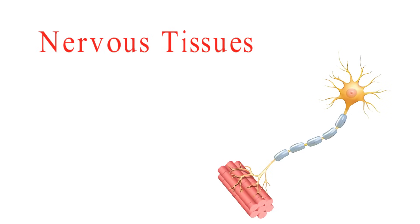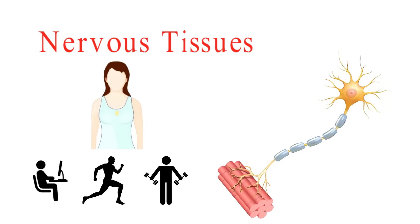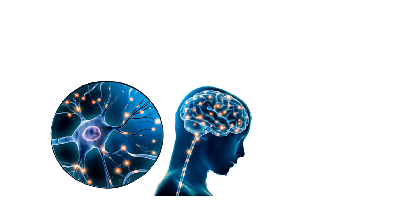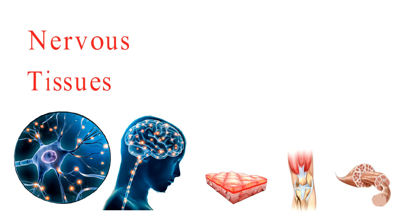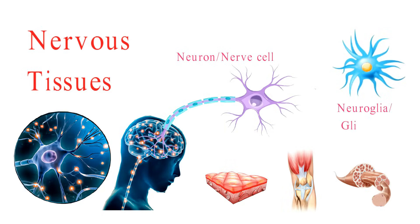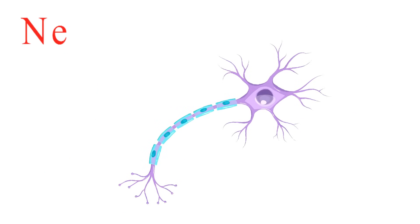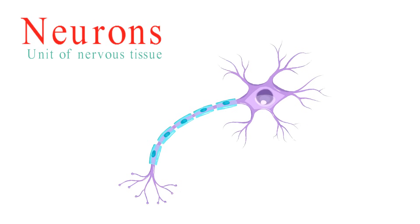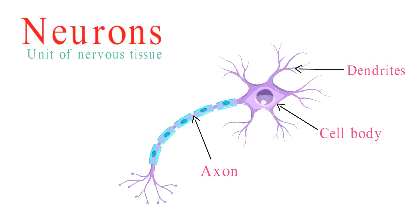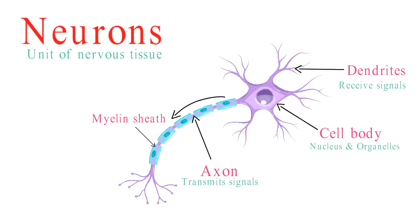Nervous tissue is a fundamental part of our bodies and plays a crucial role in how we function. Nervous tissue is one of the four primary types of tissues in the human body, alongside epithelial, connective, and muscle tissues. It's primarily composed of two main components: neurons, often referred to as nerve cells, and neuroglia, also known as glial cells. Neurons are the units of nervous tissue. They have three main parts: the cell body, dendrites, and an axon. The cell body contains the nucleus and other organelles, while dendrites receive incoming signals, and the axon transmits those signals away from the cell body. Often, axons are insulated by a myelin sheath, which speeds up signal transmission.